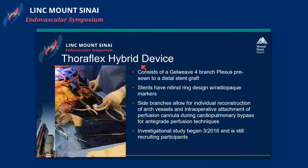Another novel device is the Thoraflex hybrid. This is a hybrid device where you actually sew the proximal aortic graft in surgically — this is one of our cases here at Mount Sinai. The stent graft component gets inserted into the more distal aorta, and you can then extend as needed with your choice of stent graft. You can bypass the innominate, carotid, and subclavian, or if you can't get to the subclavian, you can do the carotid and innominate and either do a carotid-subclavian bypass or simply ligate.